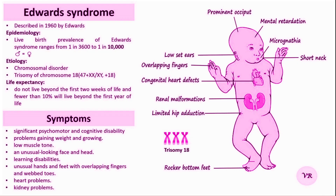It can be diagnosed prenatally through blood tests or amniocentesis, where a sample of amniotic fluid is analysed for chromosomal abnormalities. After birth, a karyotype test can confirm the diagnosis by identifying the extra chromosome.